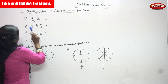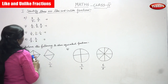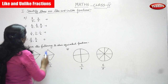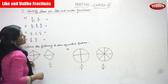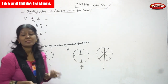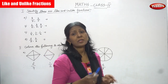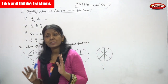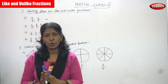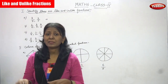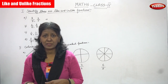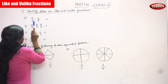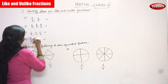The first sum is 4 by 5 and 3 by 5. The denominator in both are same but numerators are different. So if the denominators are similar it is a like fraction. If the denominators are not similar it is unlike fractions. But you should not consider the numerator — you should consider only the denominator. So 4 by 5 and 3 by 5: 5 is the denominator. In both fractions denominators are same but numerators are different.